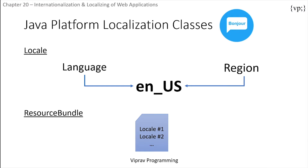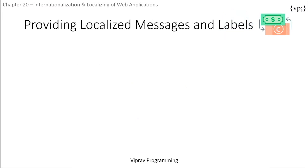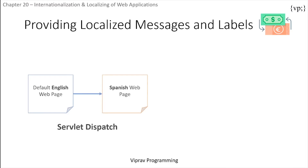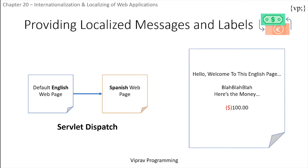There are two ways to provide localized messages and labels. First, you can provide a version of the web page in each of the target locales and have a controller servlet dispatch the request to the appropriate page depending on the requested locale — useful when large amounts of data need to be internationalized. Or, you can isolate locale-sensitive data into resource bundles, access that data so the corresponding translated message is fetched automatically, creating strings in your code and reading translations from the bundle using the corresponding key.